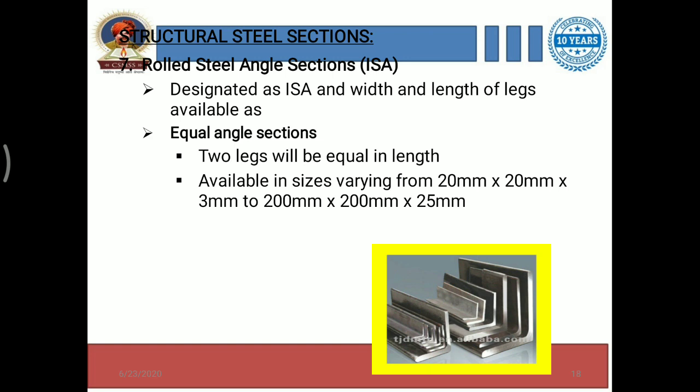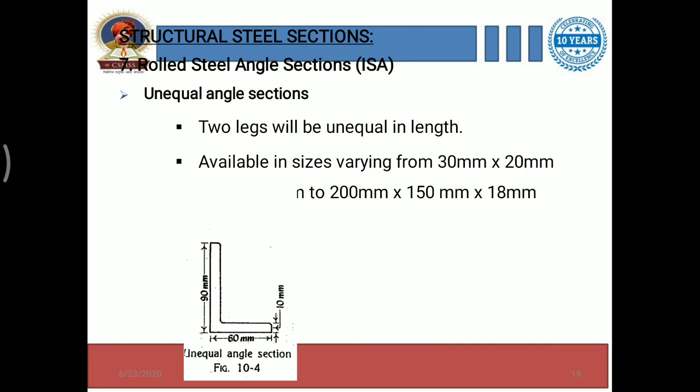Another type in rolled steel angle sections is unequal angle sections. There is a little difference between equal angle sections and unequal angle sections, and that difference lies in the length and width.